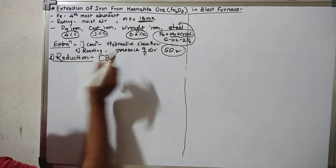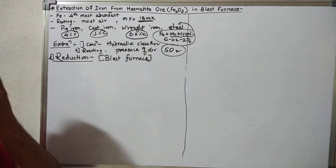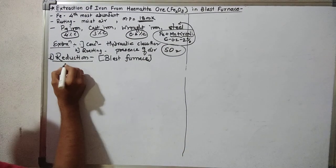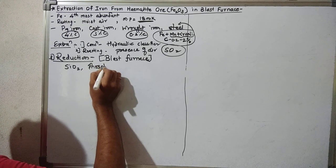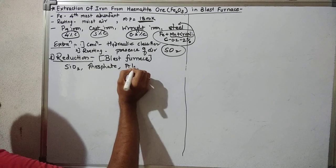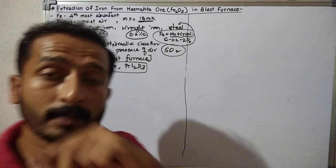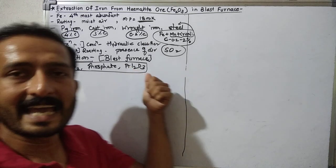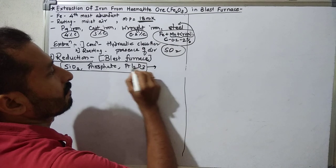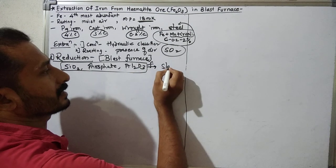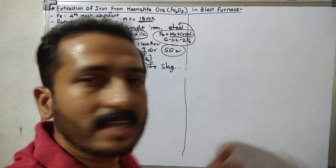Now remember, in the hematite ore, impurities like silica, phosphate, and alumina are there. So there are different types of impurities. These impurities must be removed by the use of flux. Flux combines with gang to form slag. Flux combines with gang impurities to form slag.